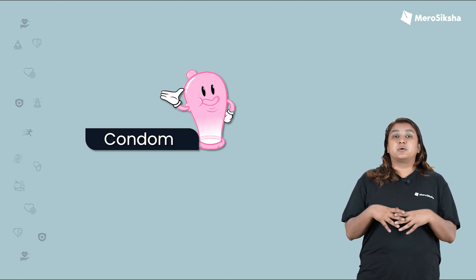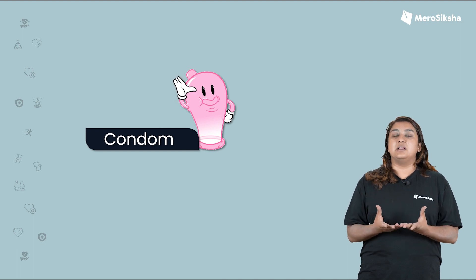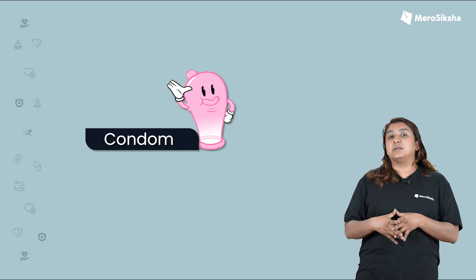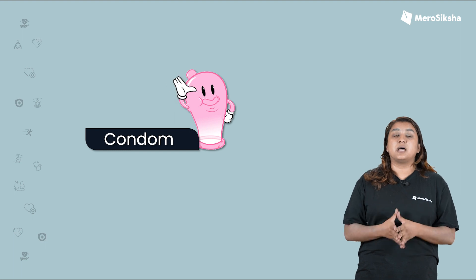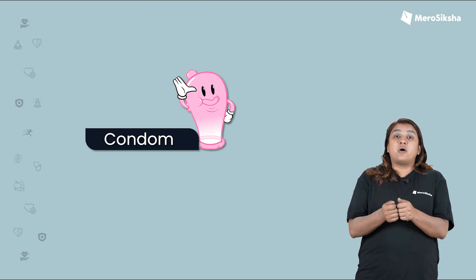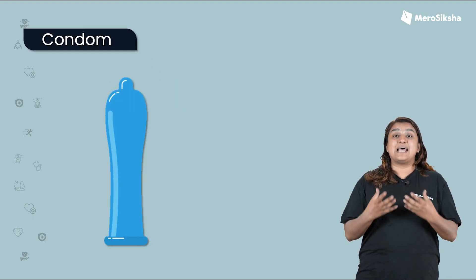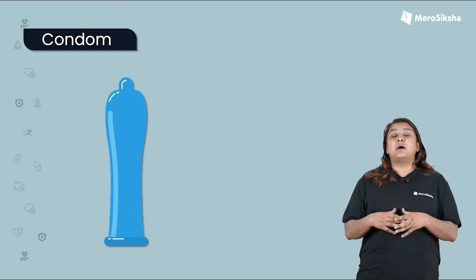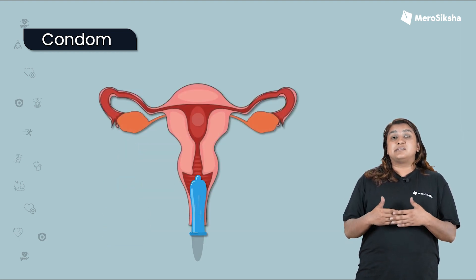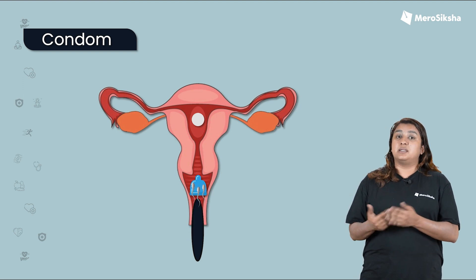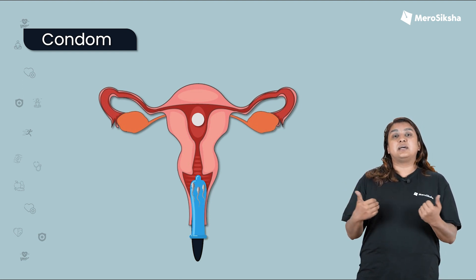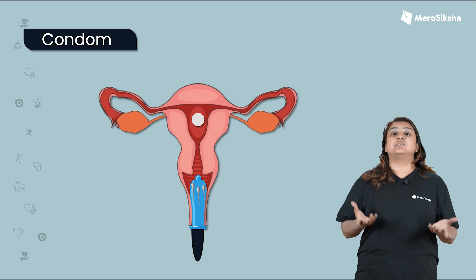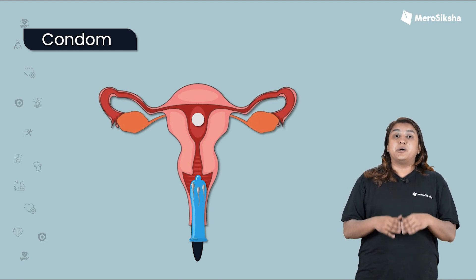We are learning about condoms and sacs — what they do. A condom blocks semen from reaching the uterus, preventing sperm from fertilization, which is how it works as a birth control method.